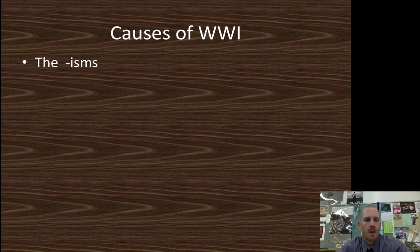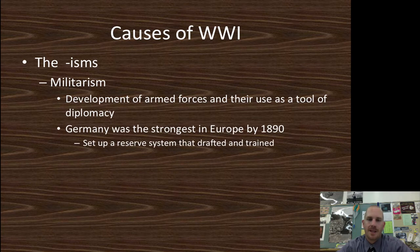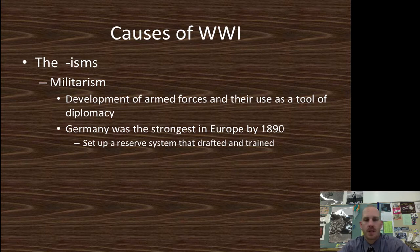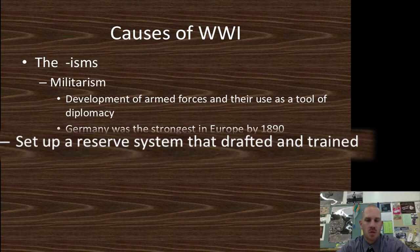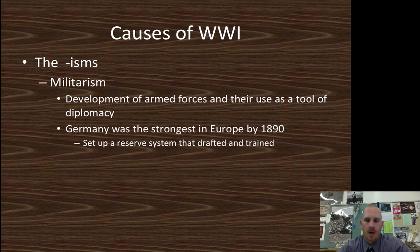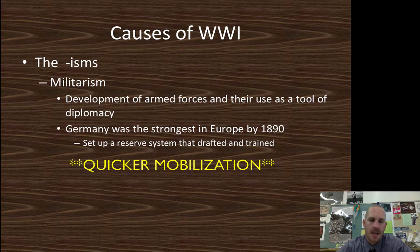The causes of World War I — the isms. The first one being militarism: the development of armed forces and their use as a tool of diplomacy, basically meaning one country is stronger militarily and is going to take a smaller country over. Germany is the strongest military power in Europe by 1890. They set up a reserve system that drafts and trains soldiers before sending them back to general work, allowing them to mobilize much quicker than, say, the United States in 1917, which had to draft and send soldiers to boot camp first.